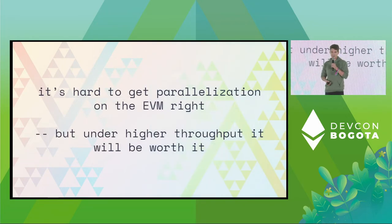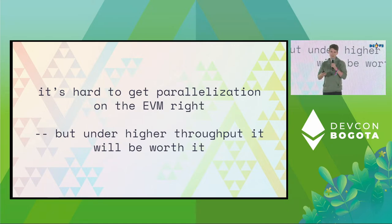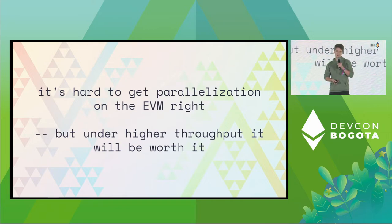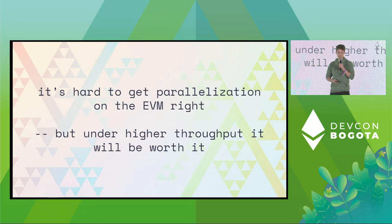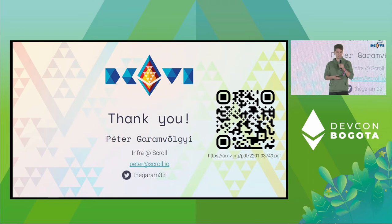Just to summarize the takeaway from this talk: it's pretty hard to get parallelization done on the EVM because it was not designed with this in mind, but I think it's going to be worth it. If you manage to scale Ethereum on layer 1 or layer 2 with a higher transaction load, parallel execution will have a very big impact on overall system efficiency. If you're interested in this research direction, I encourage you to read up on it. We have a publication on this topic — you can scan the QR code to read the preprint.